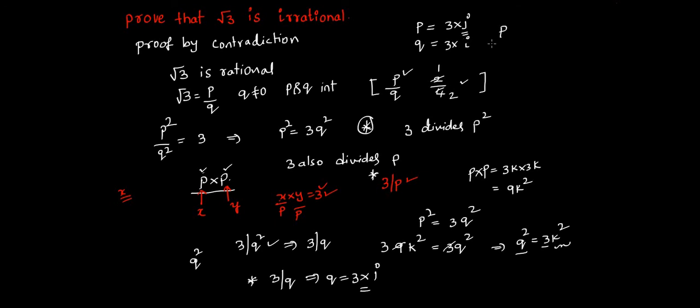Now you see, P by Q equal to 3 into J by 3 into I. Then I can cancel this 3 and 3, but you know that P by Q is in its simplest form. How could it be possible? This is called proof by contradiction. So let me extend it and really tell you what exactly means by proof by contradiction.